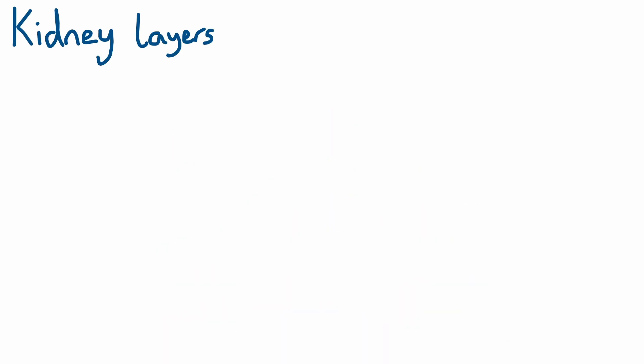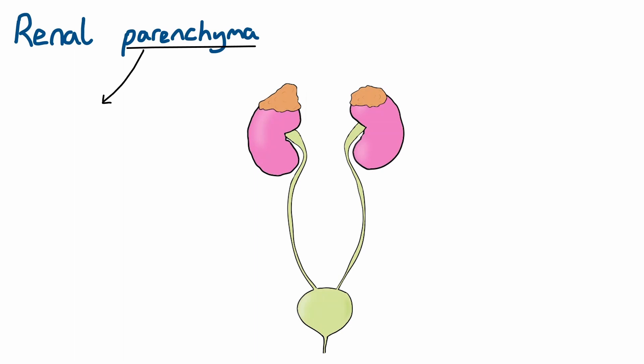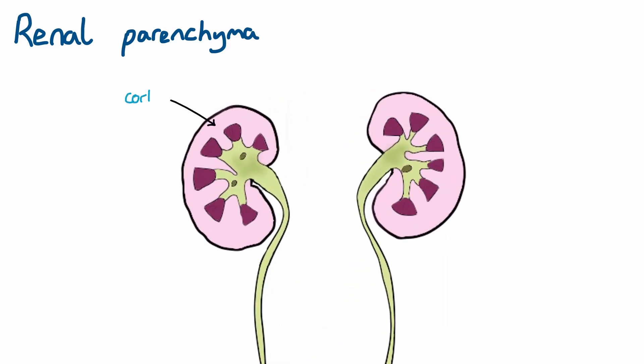Next, let's look at the anatomy of the renal parenchyma. Parenchyma just means tissue that performs the main function of an organ. In the kidneys, the outer parenchyma is called the cortex, which is adherent to the renal capsule, and the more internal parenchyma is the medulla.